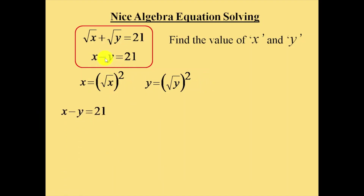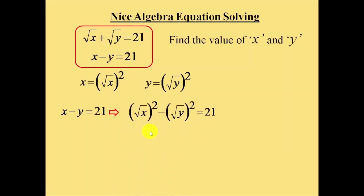In the second equation, x minus y is equal to 21. Substitute x and y with the square forms: square root of x whole square minus square root of y whole square equals 21. This expression is similar to the identity a squared minus b squared, which equals a plus b into a minus b.